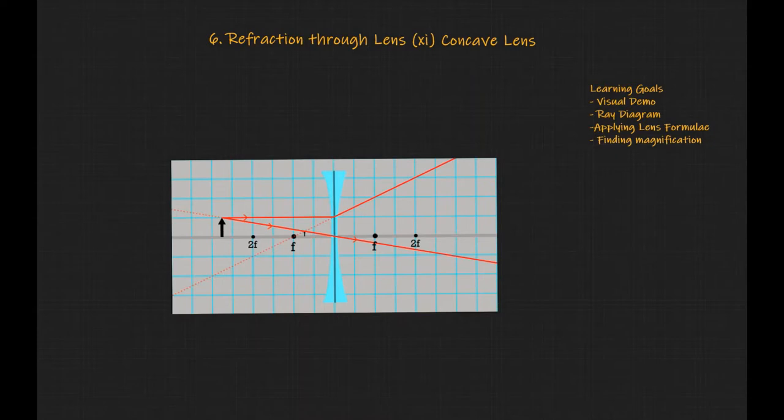Now what we mean by that is if we have an object here, so let this be an object, the rays from an indicated point on the object, they diverge off after the refraction. And our brain, our eyes, which is here, they get diverging rays and they project these rays backward and they form an indicative image.